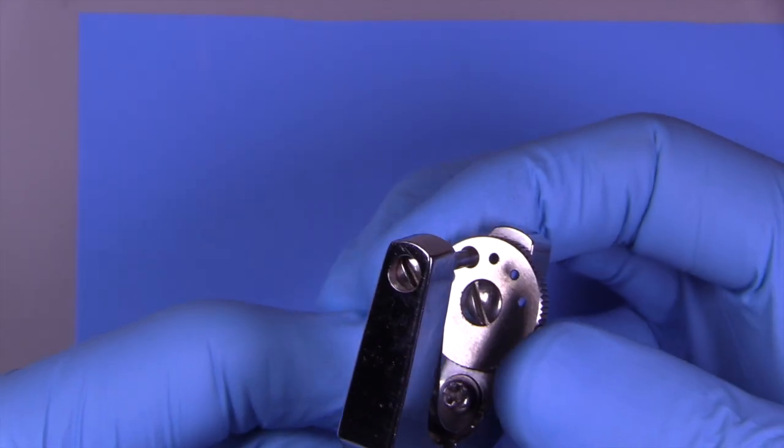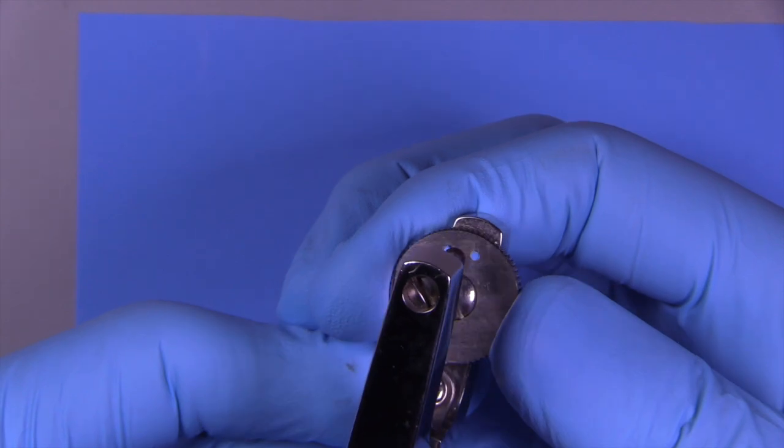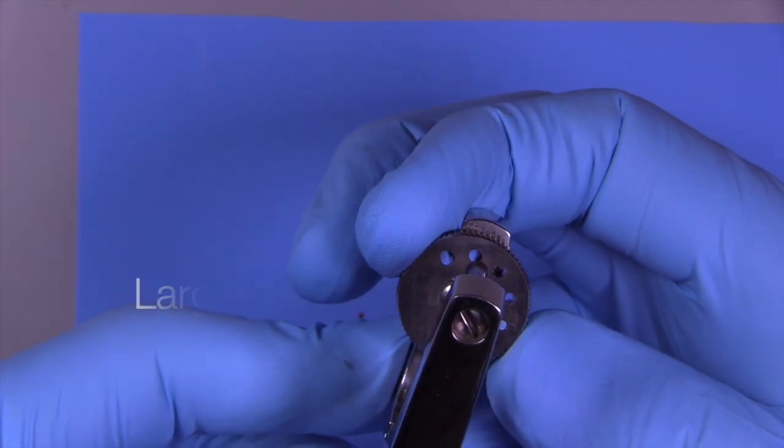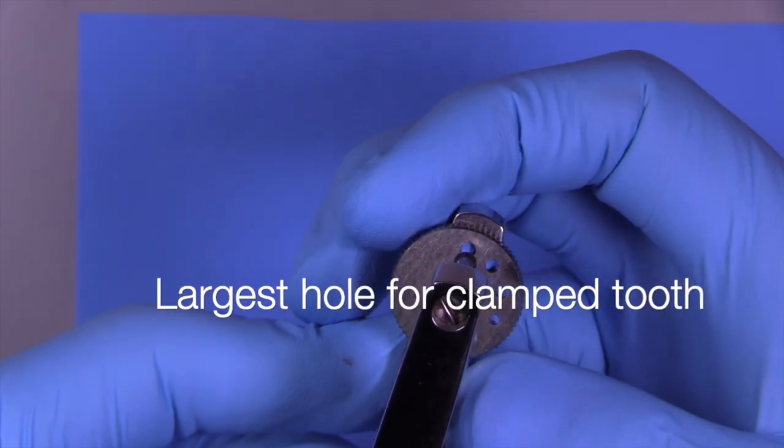We're going to utilize the largest hole for the area where the clamp is going to go, and the next largest hole down for the molar. Then we're going to move down to the premolar, which